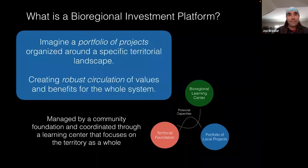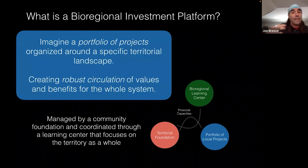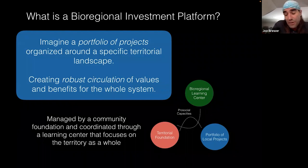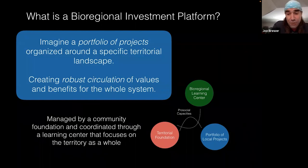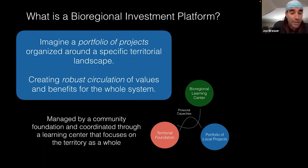One powerful way to think about this is to imagine a bioregional investment platform for the landscape where you live — a portfolio of projects organized around a specific territorial landscape, creating robust circulation of values and benefits for the whole landscape by helping all of them evolve together. In Barichara, Colombia, we're managing this by creating a community foundation with a territorial focus. The first community foundation was created in the 1920s in Cleveland, Ohio — and there's a Toronto Foundation here too. Could institutions like these help weave local projects? Can local government, conservation planning authorities, or local community groups help coordinate learning up to the territorial scale?